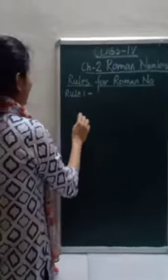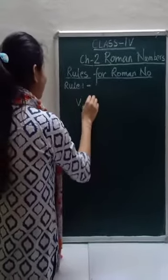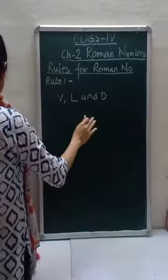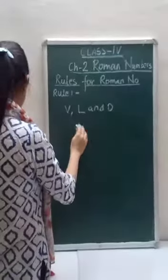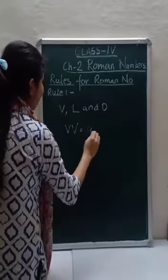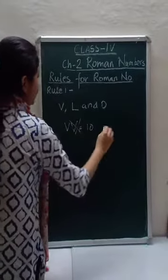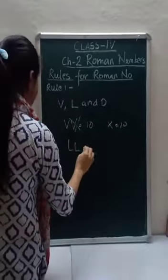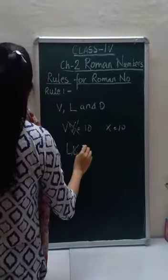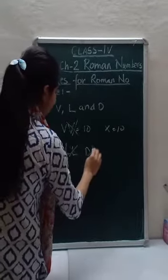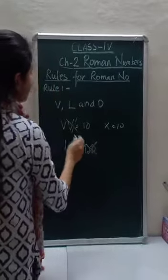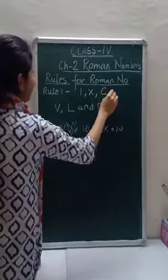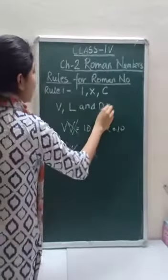For rule number 1, you always remember that V, L, and D are never repeated and their repetition is invalid. We never write VV equals 10 — this is wrong. For 10, we use X. We cannot write LL or DD. So only I, X, and C can be repeated. V, L, and D cannot be repeated.